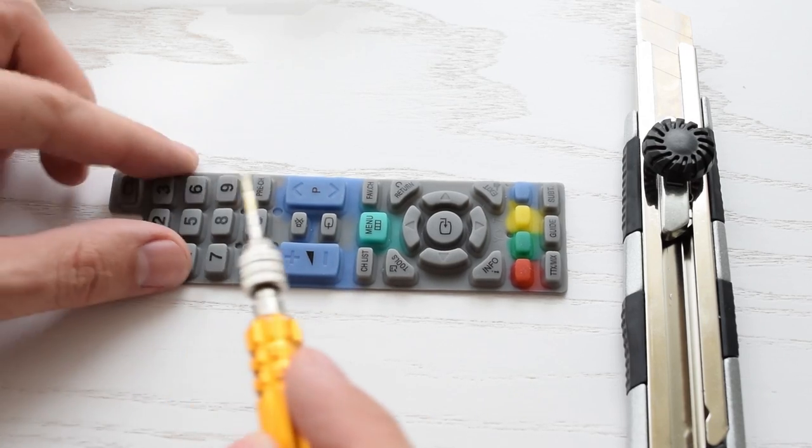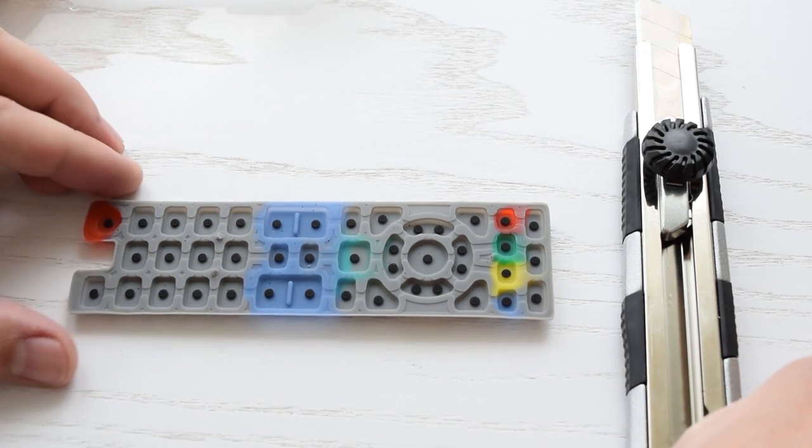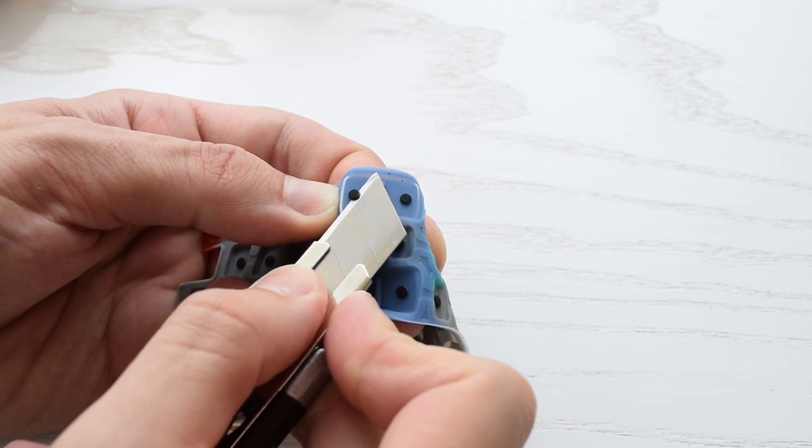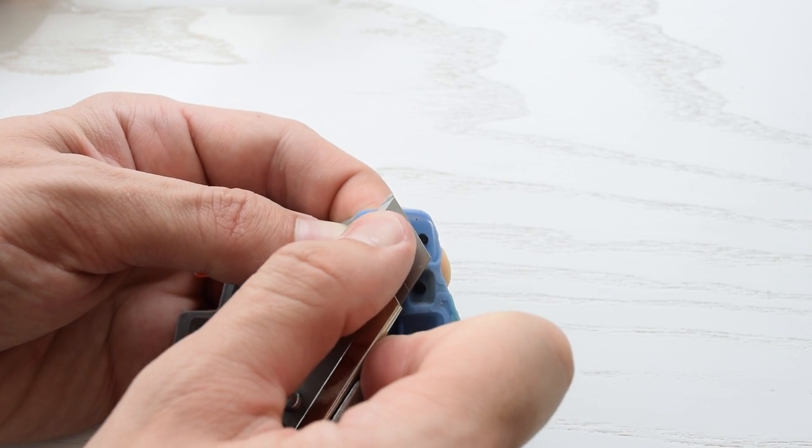Usually you have to replace or swap five buttons: volume and channel up and down and the power button. Try to cut off only black conductive material. It's usually one millimeter thick.